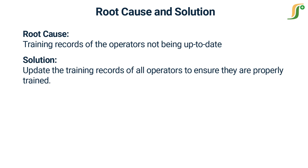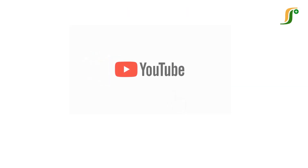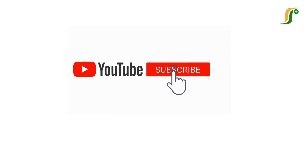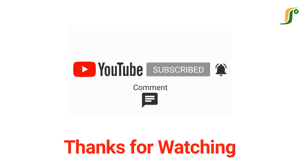Using the 5Y tool in pharmaceutical manufacturing can help to identify the root cause of problems, improve processes, and prevent future occurrences. It is important to involve a cross-functional team to ensure all perspectives are considered. In addition to the 5Y tool, other root cause analysis techniques such as fault tree analysis, fishbone diagram, and Pareto analysis will be discussed in upcoming videos. Don't forget to subscribe and hit the bell icon for regular updates. Thanks for watching.